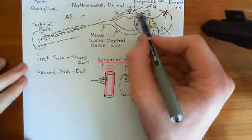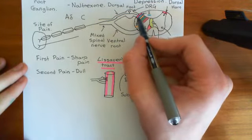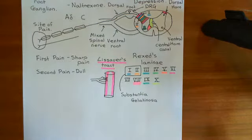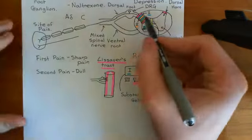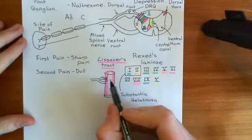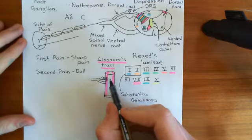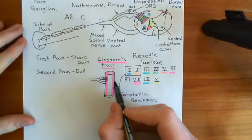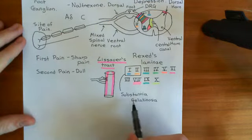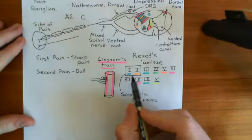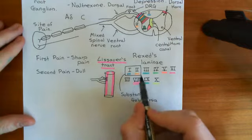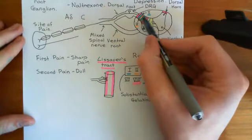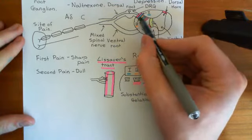This will go into the Zauer's tract and then it will break up into several processes, which will go up and down and then enter the grey matter of the spinal cord at different levels. They synapse on the next neurons along in an area called the substantia gelatinosa, which is around Rexed lamina 1 and 2 — some people quote it as Rexed lamina 2 and 3. The message is clear that it's around this area.